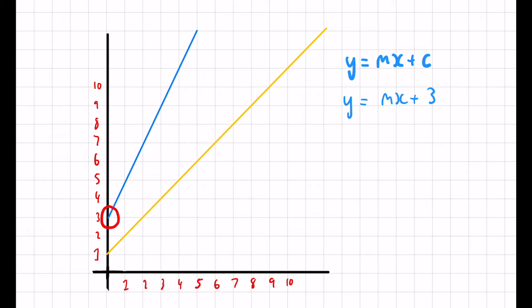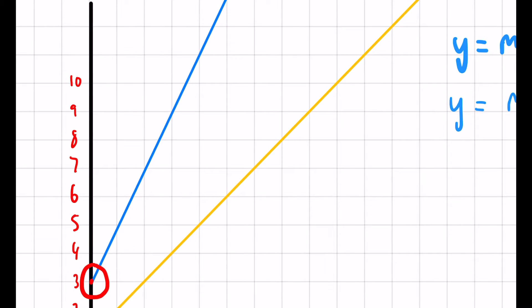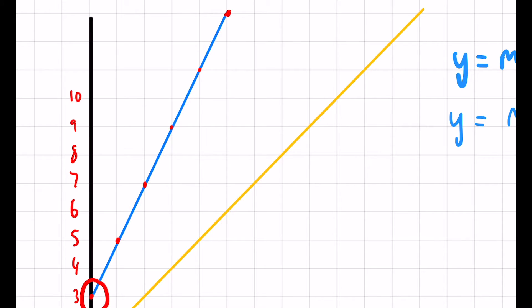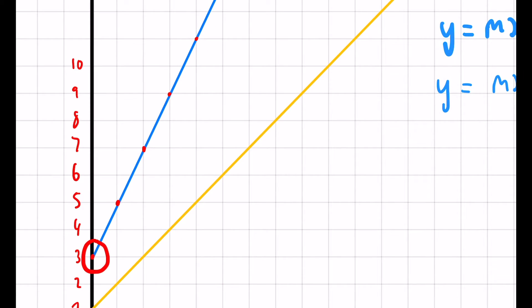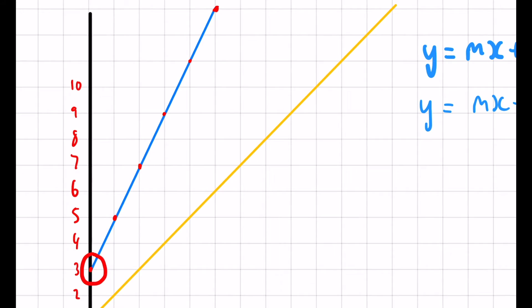Now, the next part: to work out the gradient. Some of you may look at this and already think you know the answer. The best thing I try to do is highlight the points where they cross through the nice coordinates. What I mean by that is where the coordinates are whole numbers, at the intersections of those grey lines.